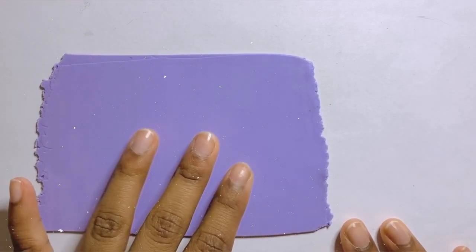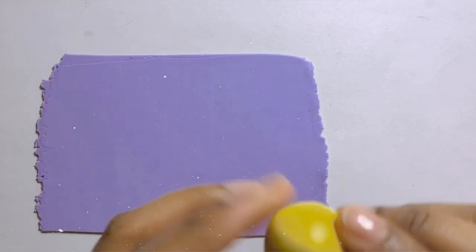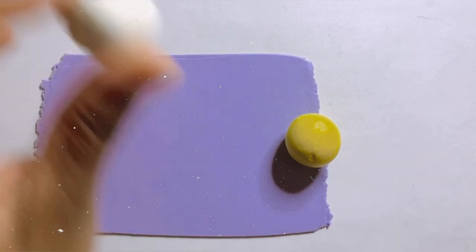For this project, I rolled out this purple color on my pasta machine in the medium thickness and I'll be using yellow and some white clay.